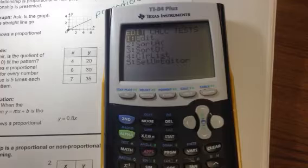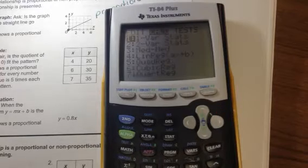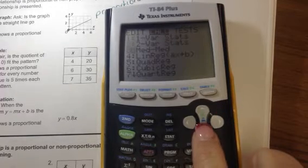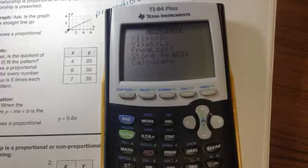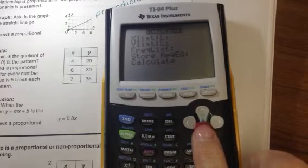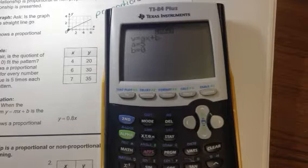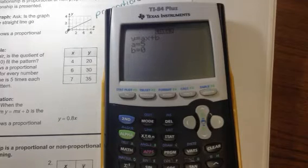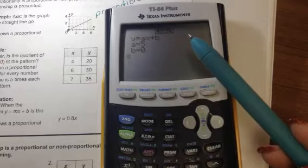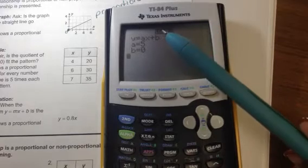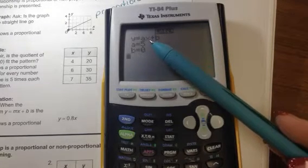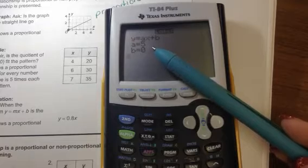I'm going to hit stat again. I'm going to move over to calc. I'm going to move down to number 4. Hit enter. I'm going to move down to calculate. I'm going to hit enter. Okay. This came up with A, which is actually my M, if you remember us talking about that. My slope is 5. My Y-intercept is 0.